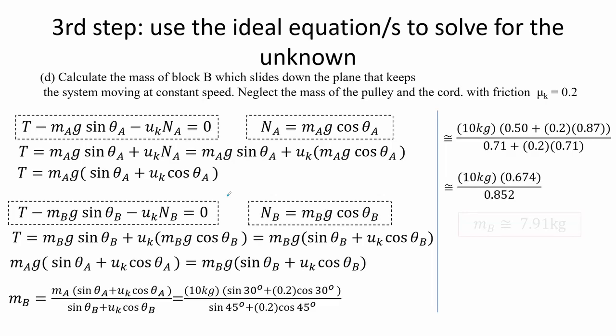The third step with the presence of friction to calculate for the mass B is done by using the ideal equations obtained earlier. We get that the mass B is equal to the ratio of mass A times the quantity sine of theta A plus the coefficient times cosine theta A over the sum of sine theta B plus coefficient times cosine of theta B. Here mass of B is approximately equal to 8 kilograms.